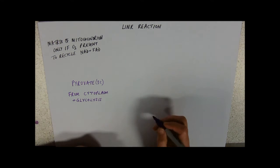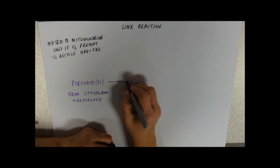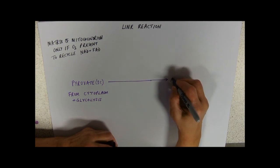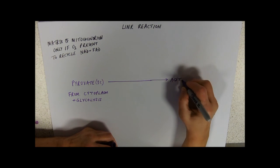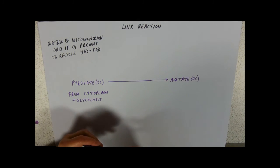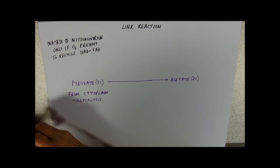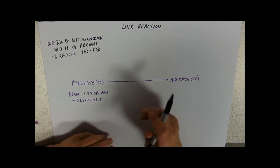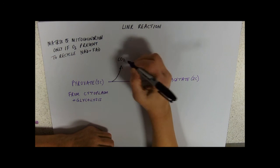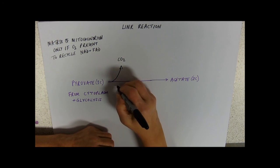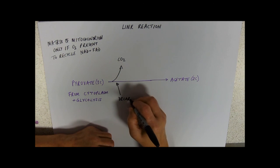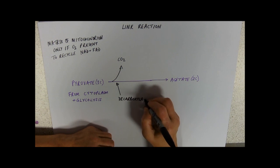The first thing that happens to our pyruvate is the only thing that happens to it in a link reaction. It's going to get made into acetate, like it is in the booklet, which is two carbons. We're taking away a carbon, but we can't just take away a chunk of carbon. I'm going to take it away as carbon dioxide. What's the enzyme that does that? The enzyme that takes away carbon dioxide is our decarboxylase enzyme.